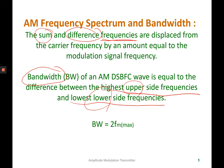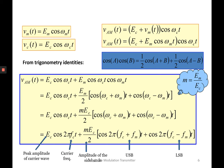We can also find the bandwidth by using this equation: take the maximum modulating frequency and multiply it by 2 to get the bandwidth. From the AM signal equation, we can expand it to get the upper side as well as the lower side frequency. This slide explains how we can get those parameters.